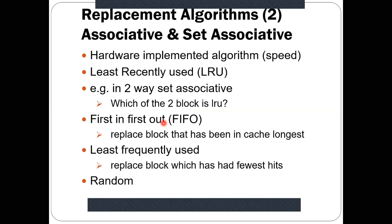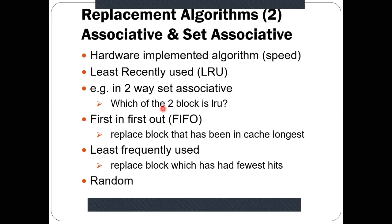With respect to associative and set associative mapping, we have a choice for replacement algorithm. We can apply different replacement algorithms here. We have discussed four different types of replacement algorithms, though there can be others. When we implement these algorithms in hardware, it boosts speed. But you can implement them in software as well.